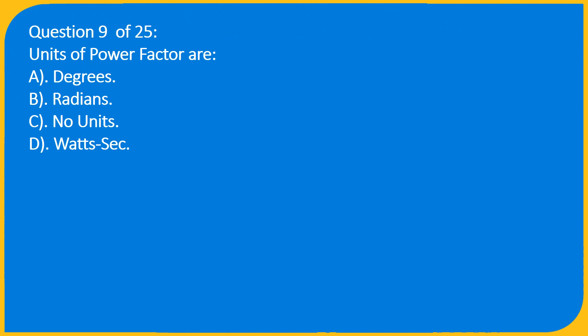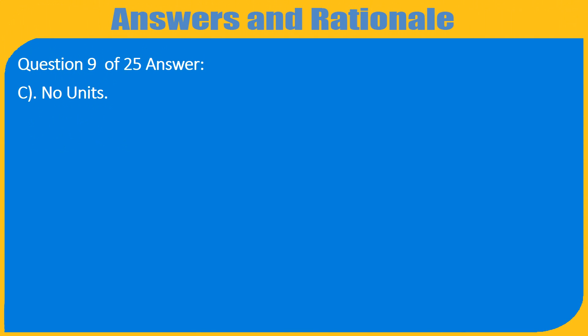Question 9 of 25: Units of power factor are — A. Degrees, B. Radians, C. No units, D. Watt-sec. Answer: C. No units.